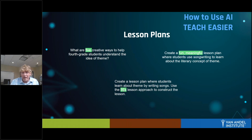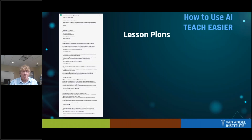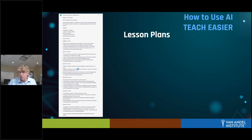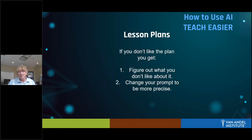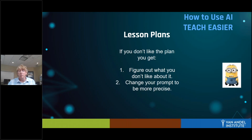You can also use any framework you want — say you want this lesson built in the five E's approach, and it will do that for you. It will produce something extensive. If it's giving you too much or not what you want, figure out what you don't like and tell it to fix that. If it's too long, just say 'do that again but make it half as long' — and it will. You can shift from being the minion who does all the tasks to being the big boss who tells the machine what you want, and it does it in seconds.